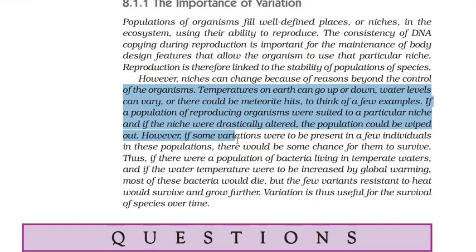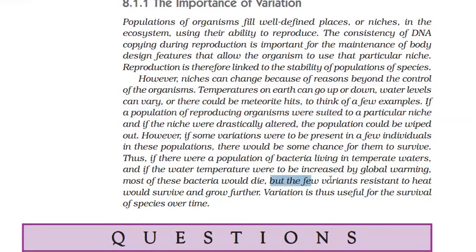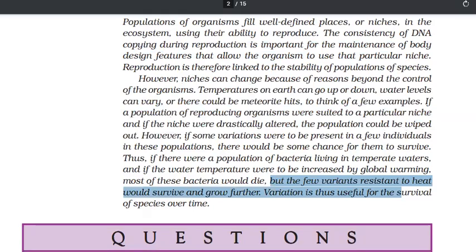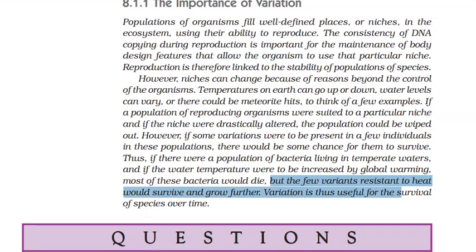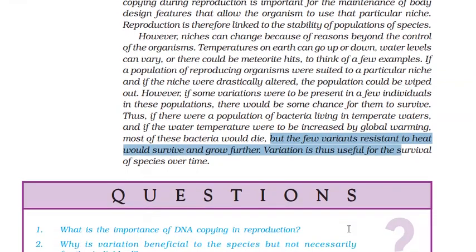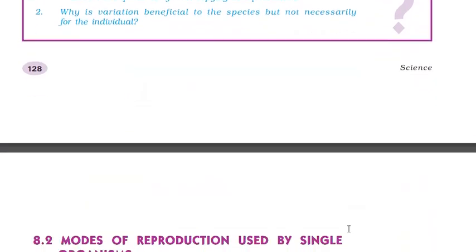If there is change, the population could vanish. However, if there are some variations in some individuals in a population, there would be some chance for them to survive. For example, consider a population of bacteria living in a pond at a particular temperature. Due to global warming, the temperature of the water increases. Most bacteria will not cope with the high temperature and will die, but some bacteria with a variation will be able to bear the high temperature and survive. So variation can help in survival when environmental factors change.